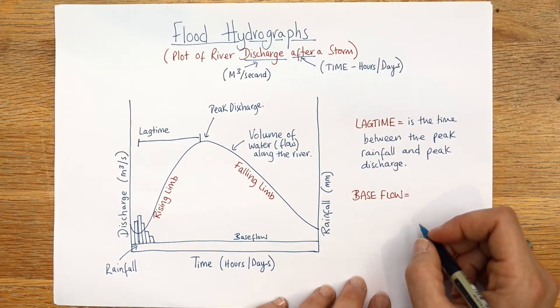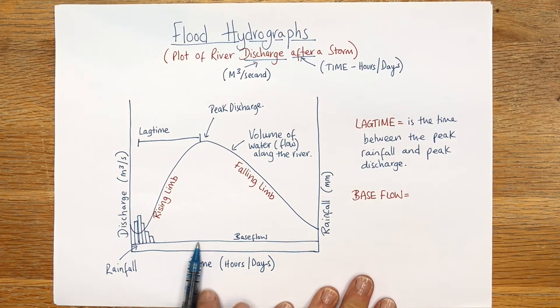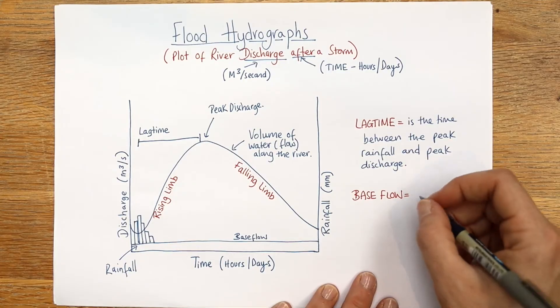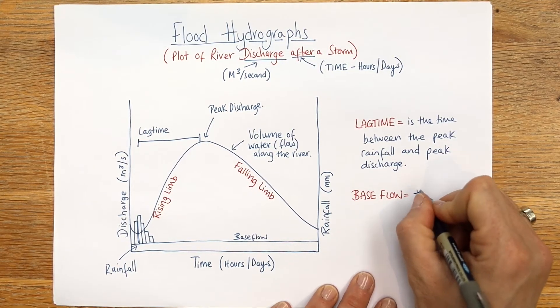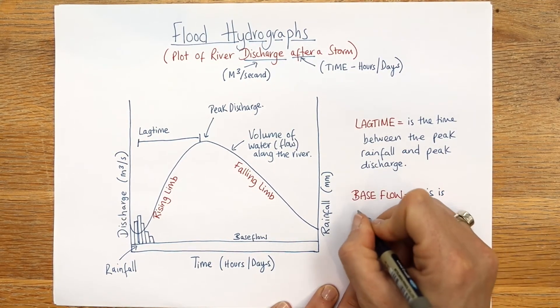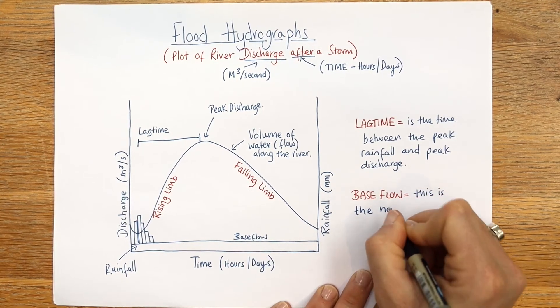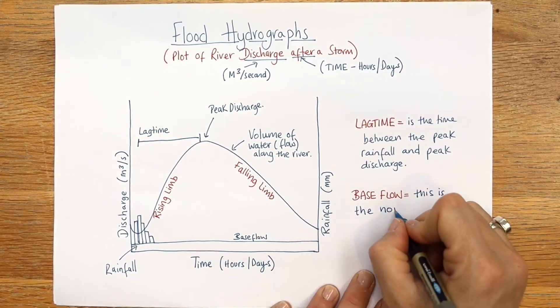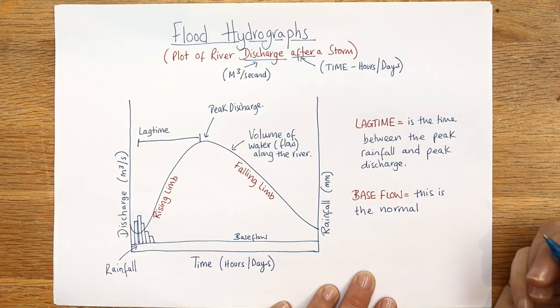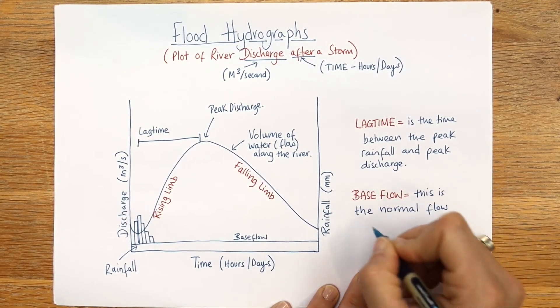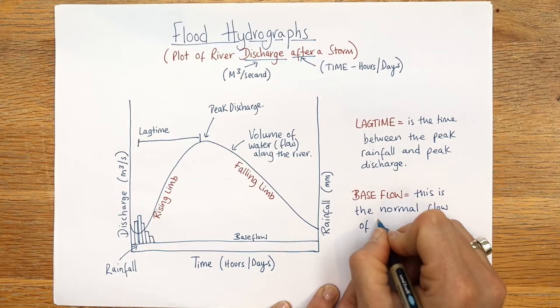And then the base flow - look how low the base flow is - and the base flow is the normal flow of the river. I know mine is quite exaggerated but that can happen to rivers. This is the normal flow of the river.